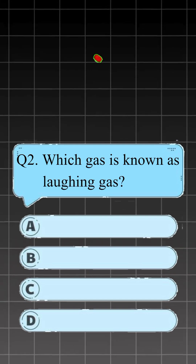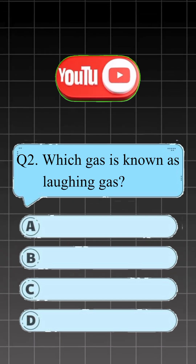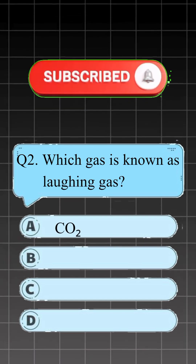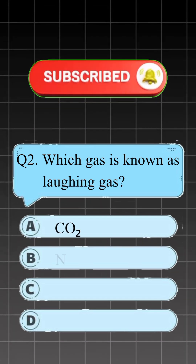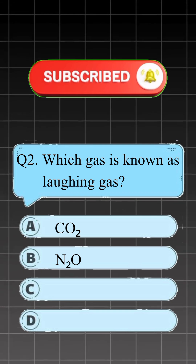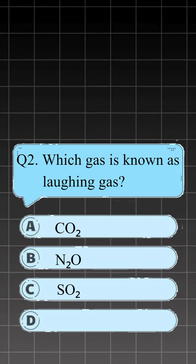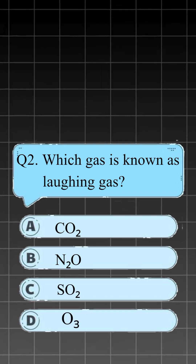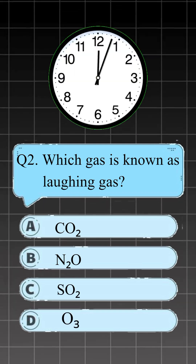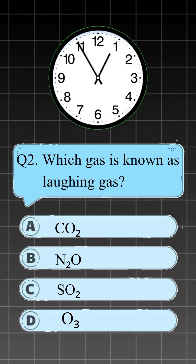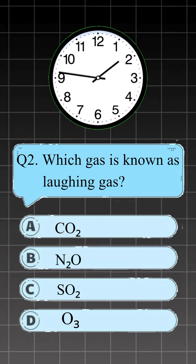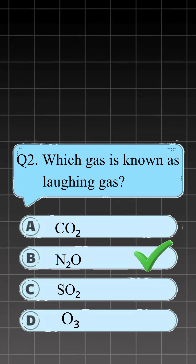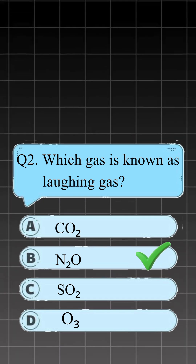Question 2. Which gas is known as laughing gas? A, CO2; B, N2O; C, SO2; D, O3. Right answer is B, N2O.